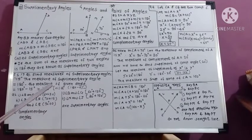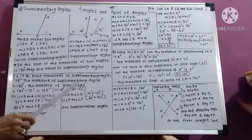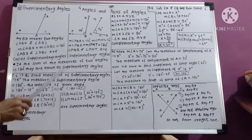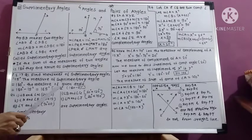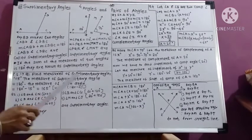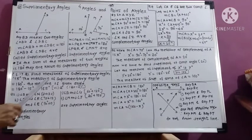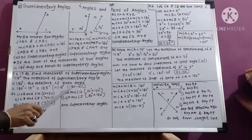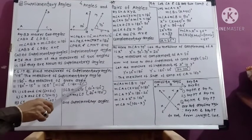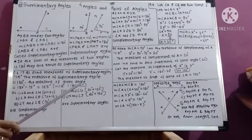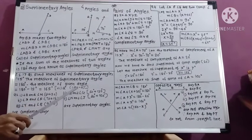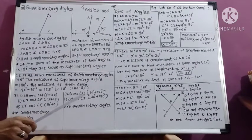In the seventh example of that question, the measure of the given angle is 'a' degrees. By writing the formula: 180 degrees minus a degrees equals the measure of the supplementary angle. So 180 minus a degrees is the measure of the supplementary angle. This is the typical example in that question.